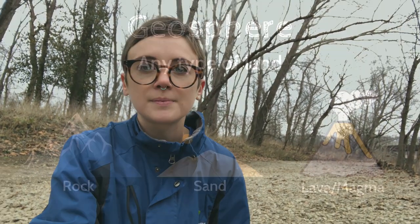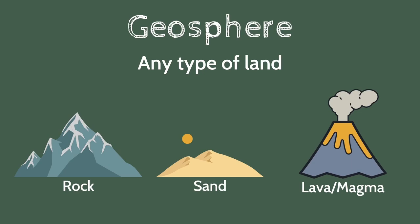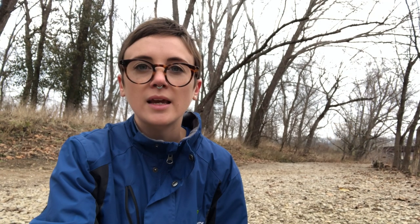The first sphere that we're going to look at is the geosphere. The beginning of that word, geo, means earth. So the geosphere is everything that is the earth itself — it is rocks and gravel like what's behind me here. It is soil underneath your feet as you walk, and it's also sand and landforms like mountains and volcanoes.